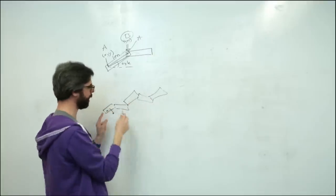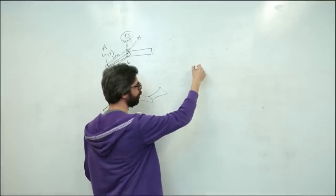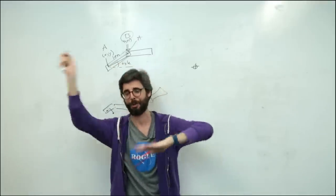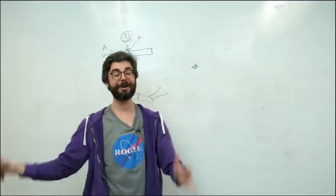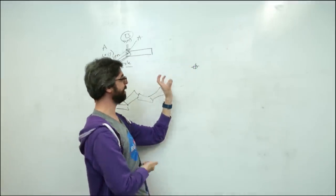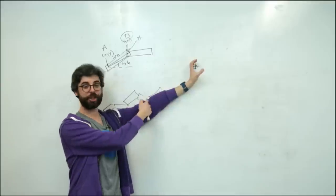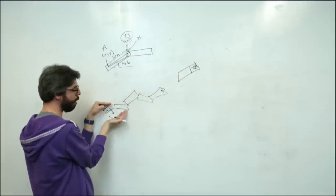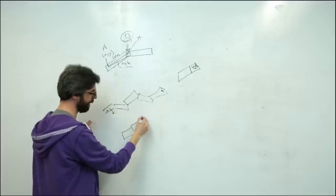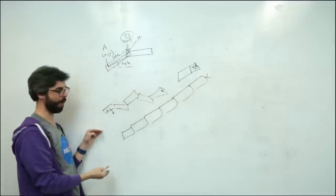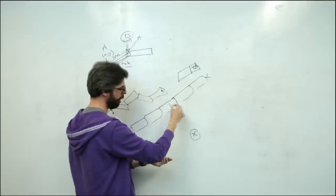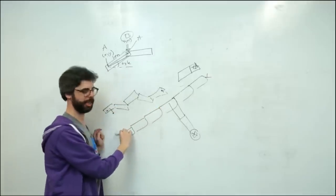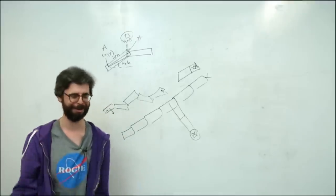Inverse kinematics does, as the name states, the inverse. What if you imagine this arm — this connected set of segments — needed to reach and grab something? This is a problem in robotics: you create a robot arm that's a bunch of things connected with some kind of rotational mechanism, and you need to figure out how the arm picks up something. If I know the endpoint, how do I figure out how all of these should be oriented to reach that point?